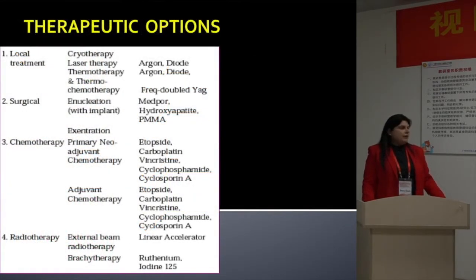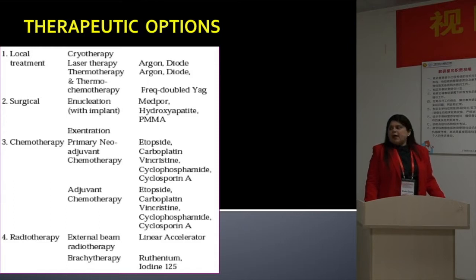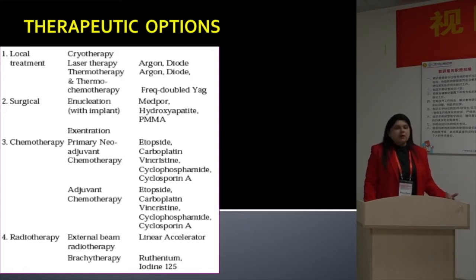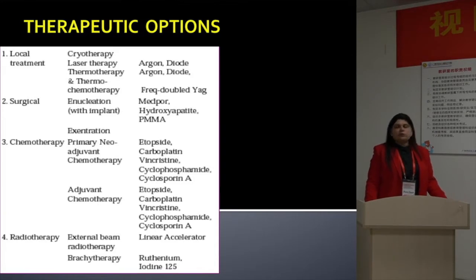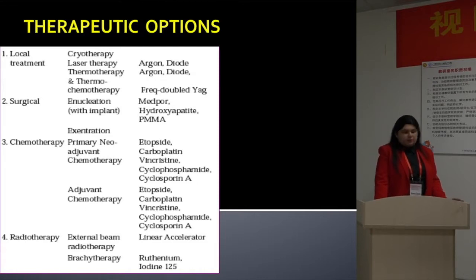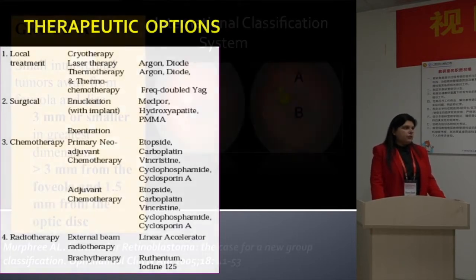We have many therapeutic options for retinoblastoma: local treatment, surgical treatment, chemotherapy, and radiotherapy. As far as chemotherapy is concerned, it can be used as primary chemotherapy for chemoreduction, as adjuvant chemotherapy in cases of higher risk histopathological features, as neoadjuvant chemotherapy, or in cases of extraocular retinoblastoma. I will confine my talk to systemic chemotherapy used for intraocular tumors.